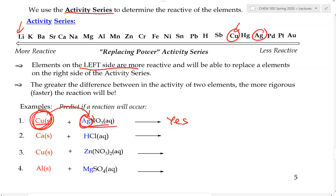How fast will this reaction be? Copper and silver are relatively close on the activity series but not extremely close, so the reaction will happen but it won't be an extremely fast reaction. Still, there will be a reaction.